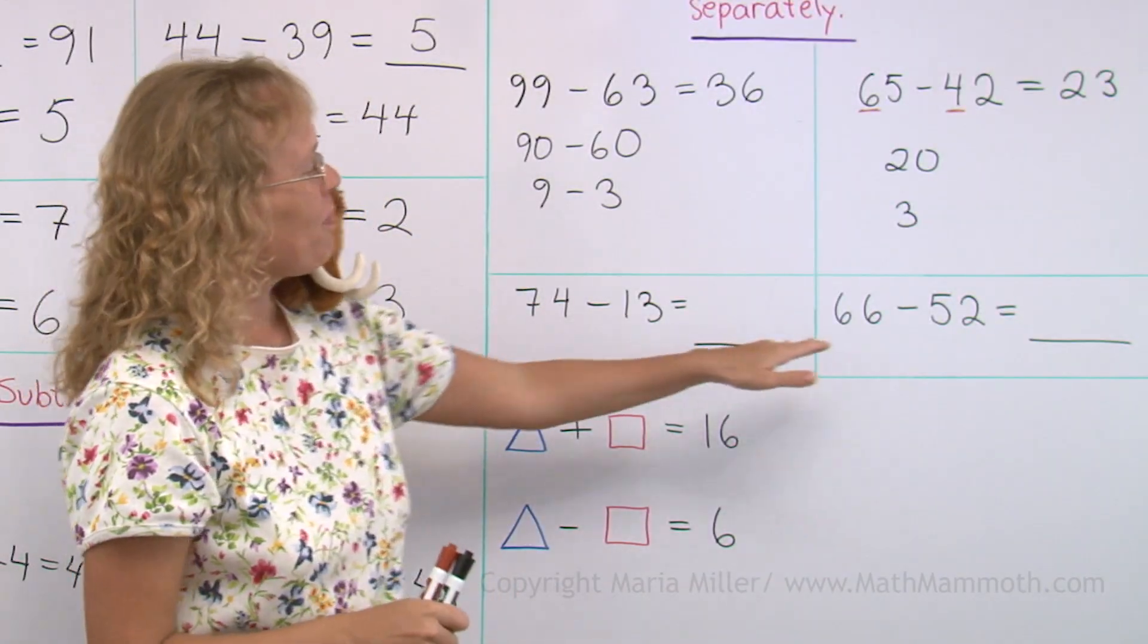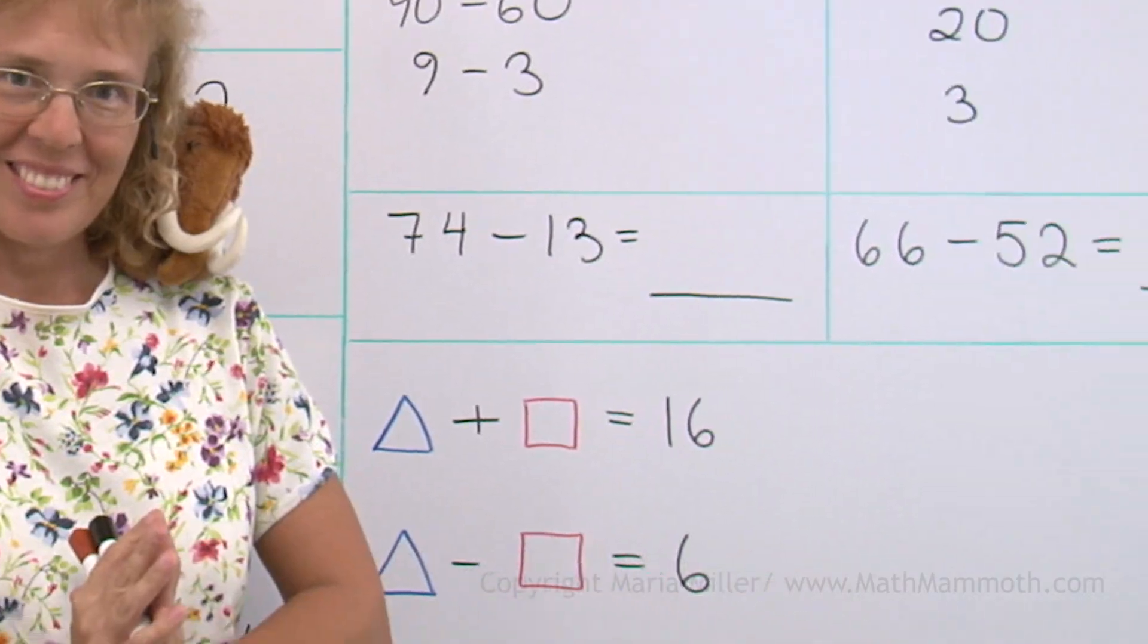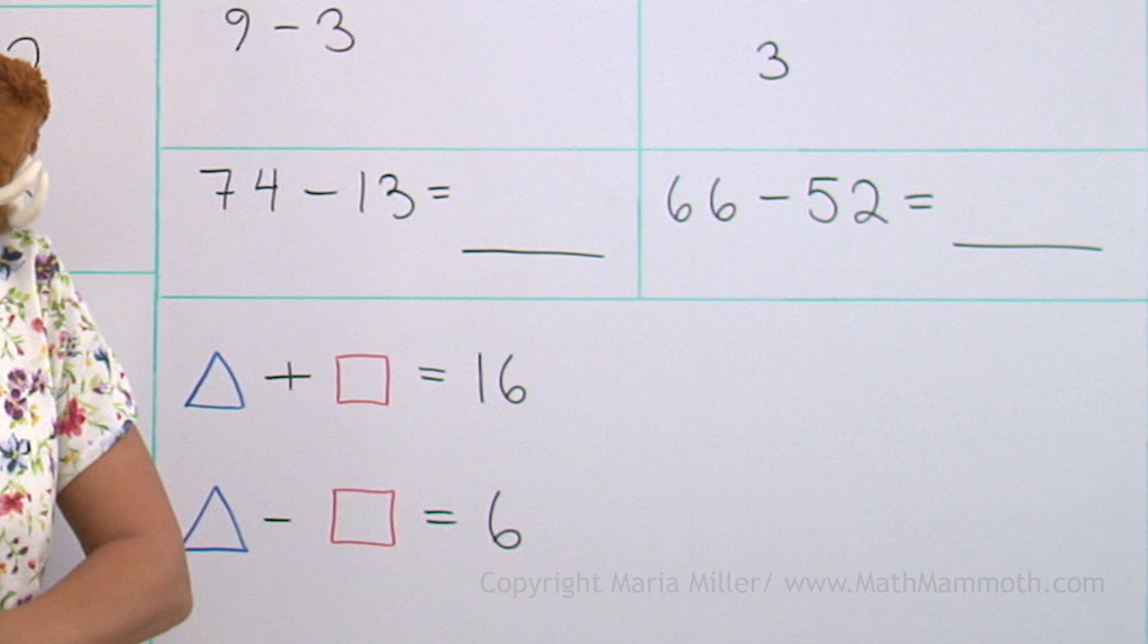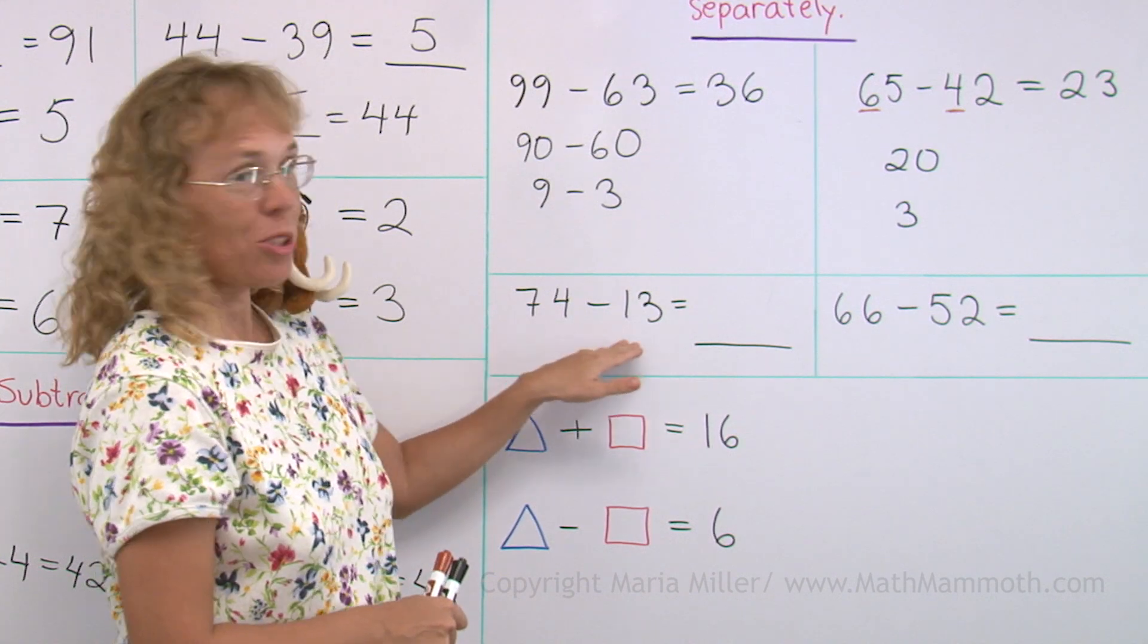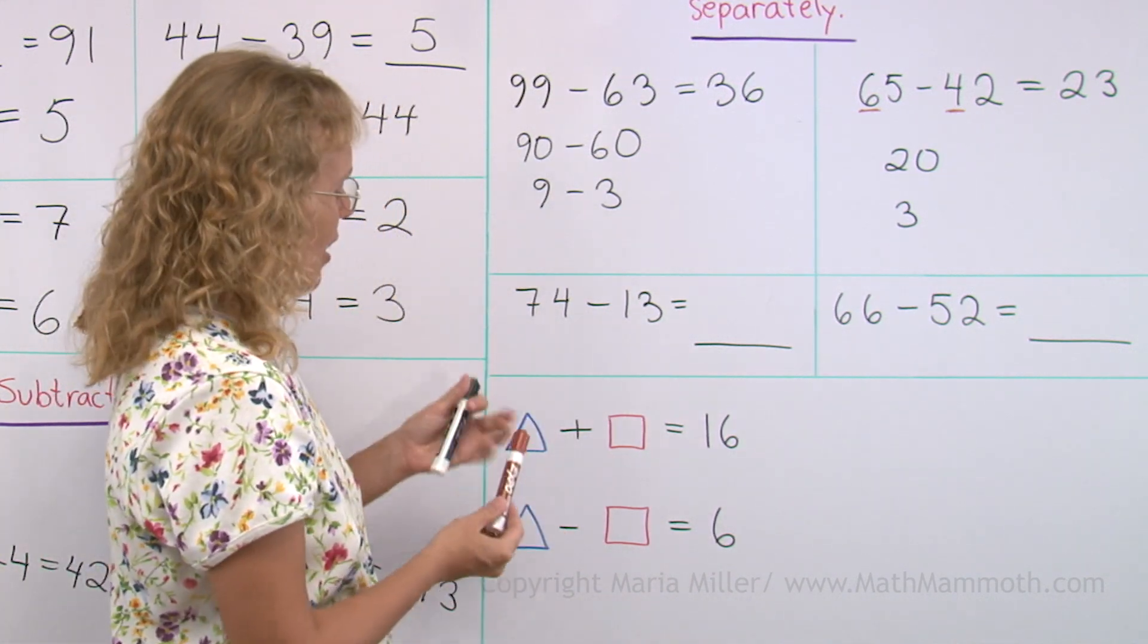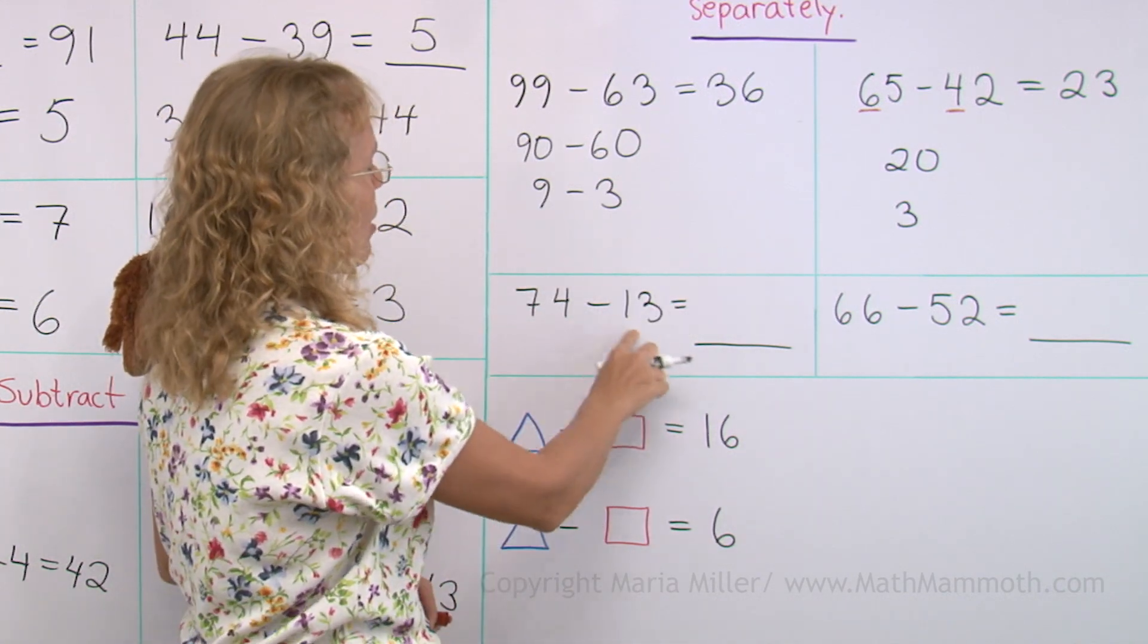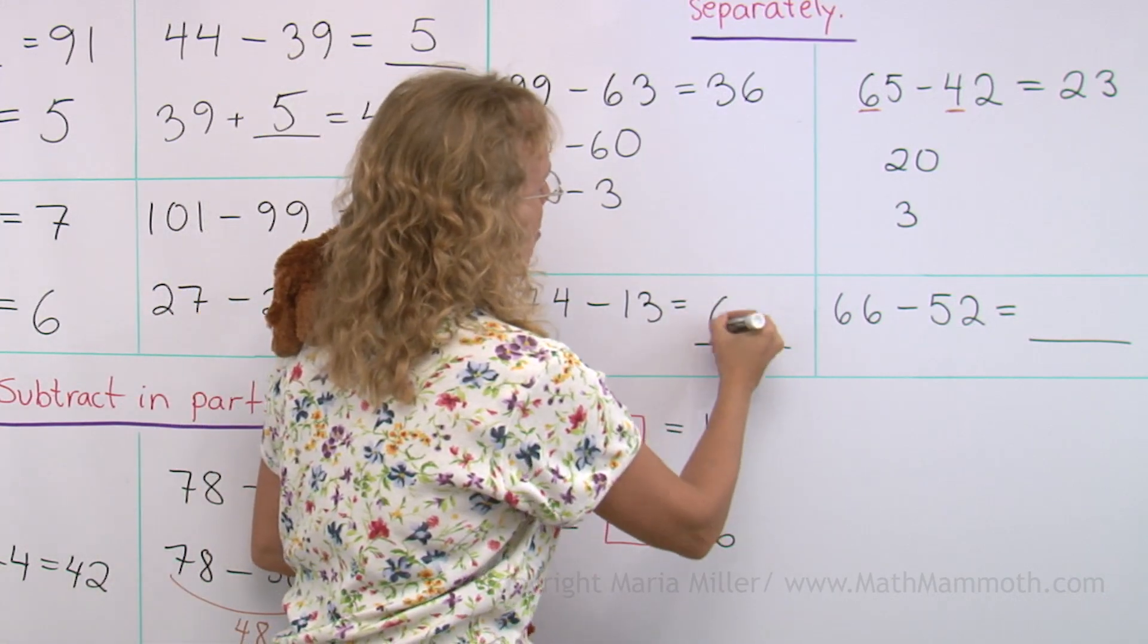For these two, use whatever method you want to, but subtract mentally. 74 minus 13. 70 minus 10 would be 60. And then 4 minus 3 is 1. So we get 61.